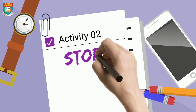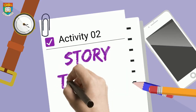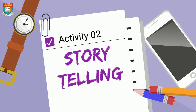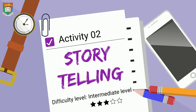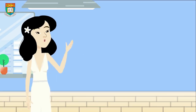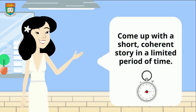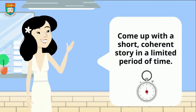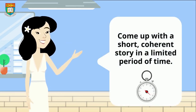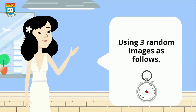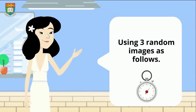Activity 2: Storytelling. Before introducing the activity, I advise you to prepare a set of paper and pens so your ideas can be recorded. In this activity, I would like you to come up with a short, coherent story in a limited period of time, using three random images provided to you.